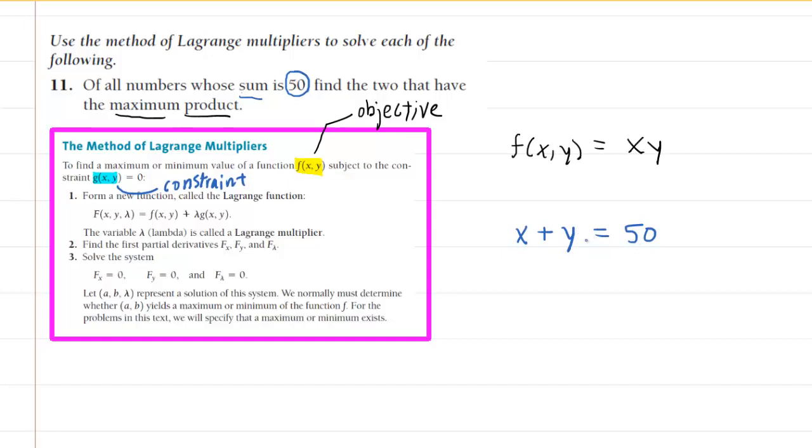Now, to actually change this constraint into the g of xy, we have to make sure that we set this equal to 0. That's very important to take your constraint and set it equal to 0. So to do that, we would subtract 50 from both sides of the equation. This would give us x plus y minus 50 is equal to 0. So this is our constraint equation in another form.